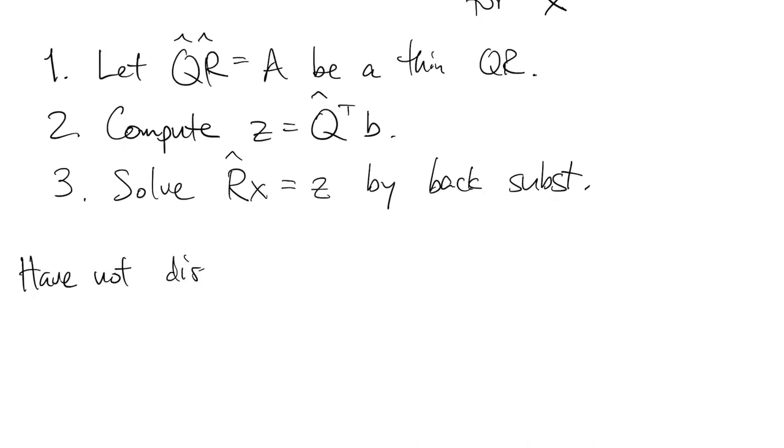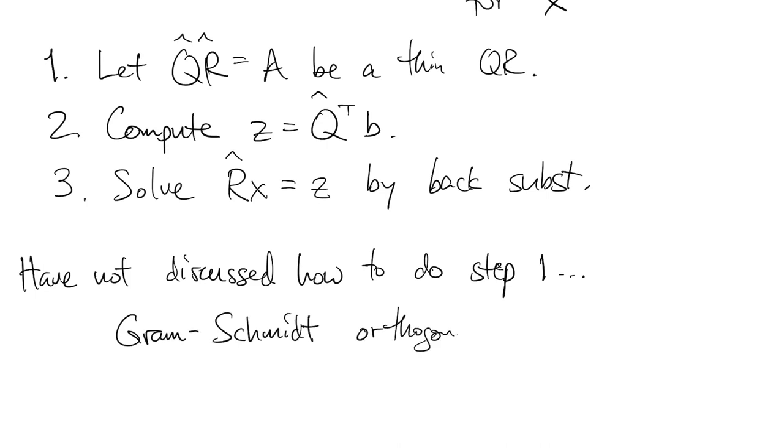I haven't yet mentioned how you actually get this factorization. The classic way that you see in an introductory textbook on linear algebra is to use Gram-Schmidt orthogonalization. Unfortunately, in finite precision, it's unstable. So a stable way of doing it is to use what are called Householder reflections. And that's a subject for the next section of the book.